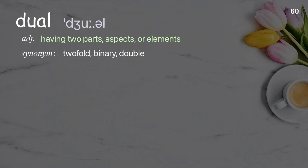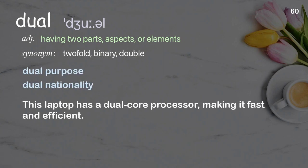Dual. Having two parts, aspects, or elements. Examples: Dual purpose. Dual nationality. This laptop has a dual-core processor, making it fast and efficient.